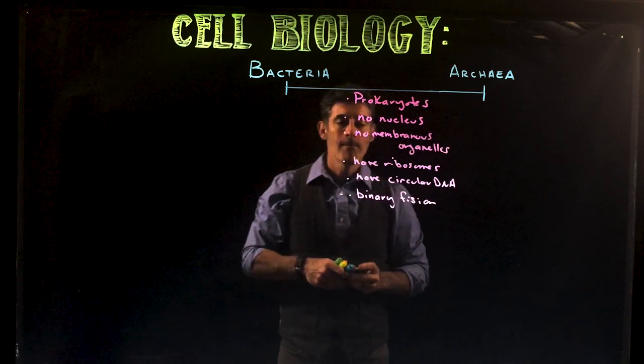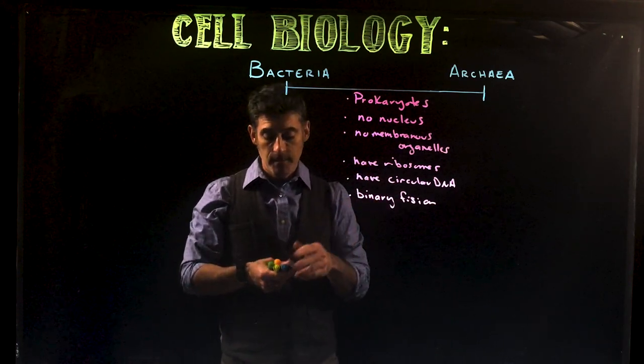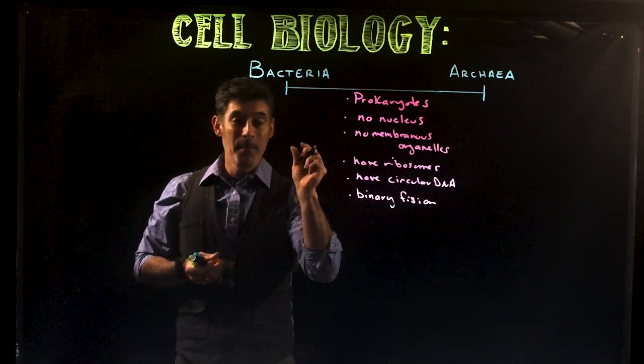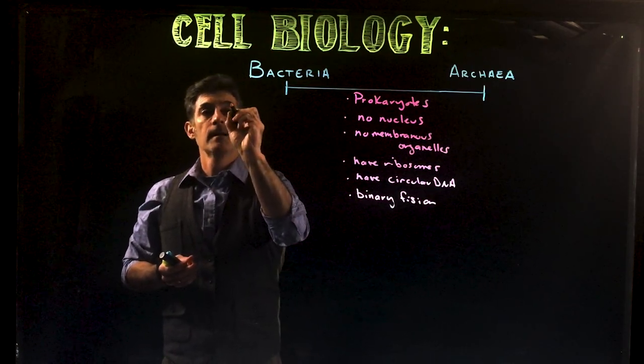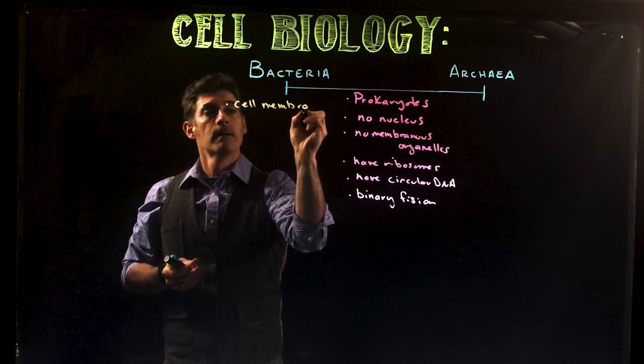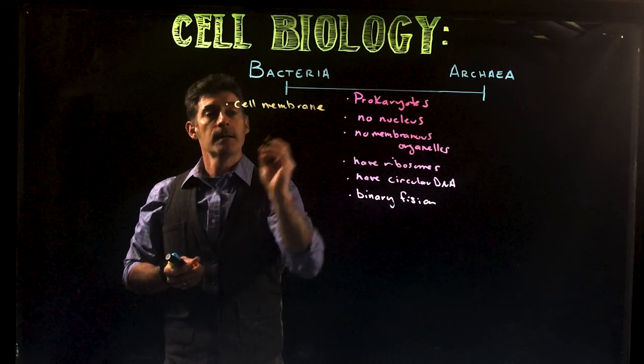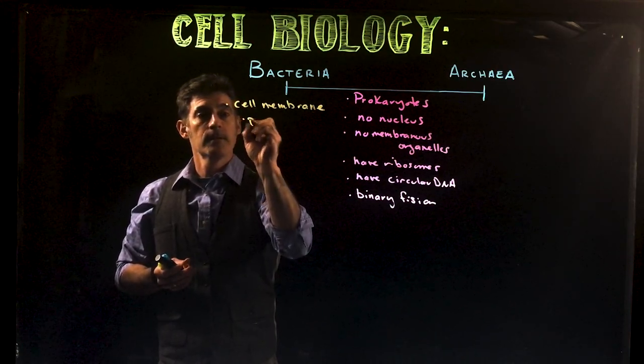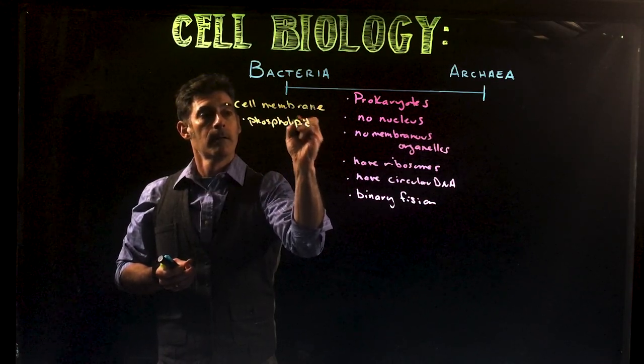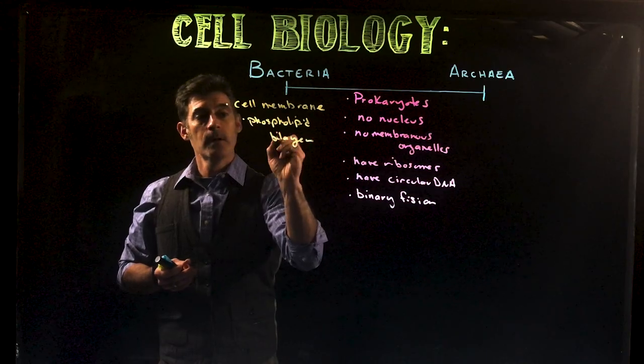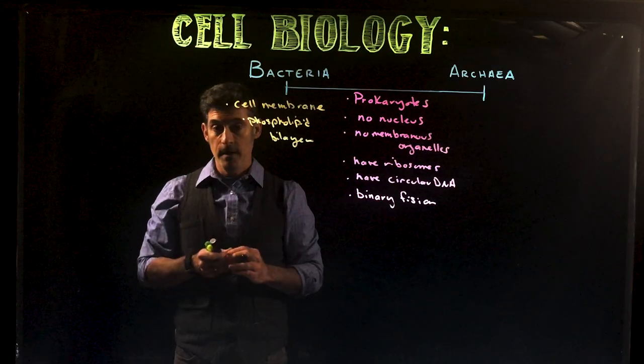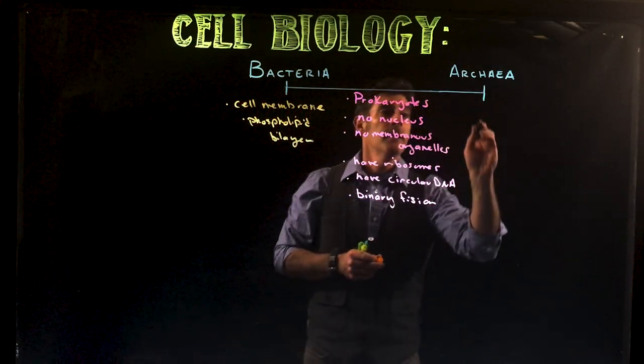Now, what sorts of things are different between the two? So bacteria's cell membrane really starts off there. Cell membrane is a typical phospholipid bilayer. That's the one that you've studied. It's the same type of phospholipid bilayer as in eukaryotic cells as well.